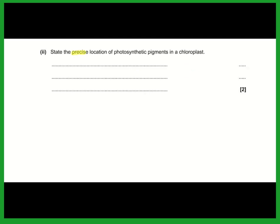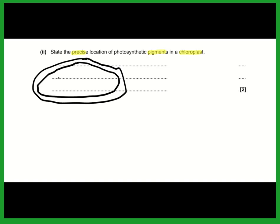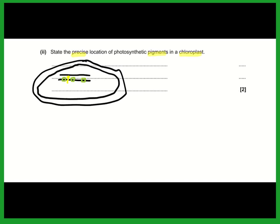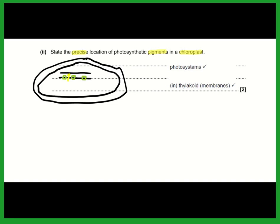State the precise location of photosynthetic pigments in a chloroplast — the word 'precise' is important. The chloroplast has an outer membrane, inner membrane, and thylakoid membranes. The photosynthetic pigments such as chlorophyll A, chlorophyll B, and carotenoids are embedded in photosystems within the thylakoid membranes. The flow of electrons causes hydrogen ions to move from the stroma into the thylakoid interior and out through ATP synthase, generating ATP. The examiners wanted you to state that photosystems are in the thylakoid membranes.